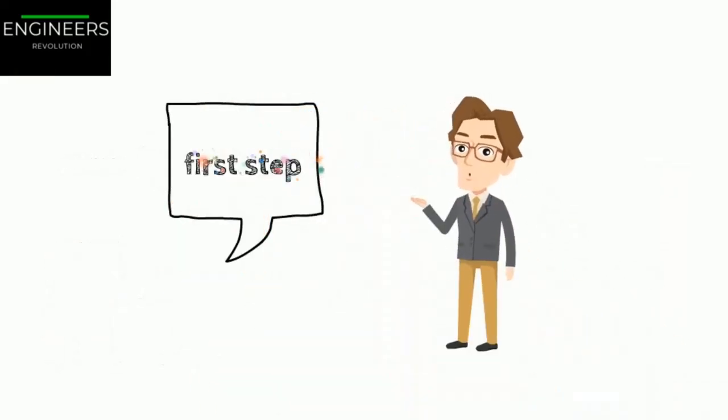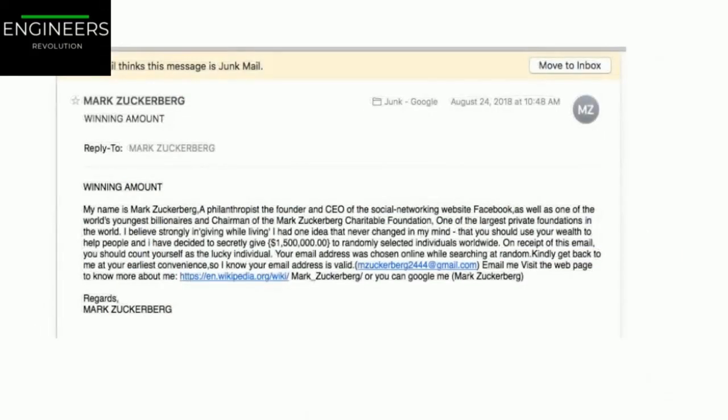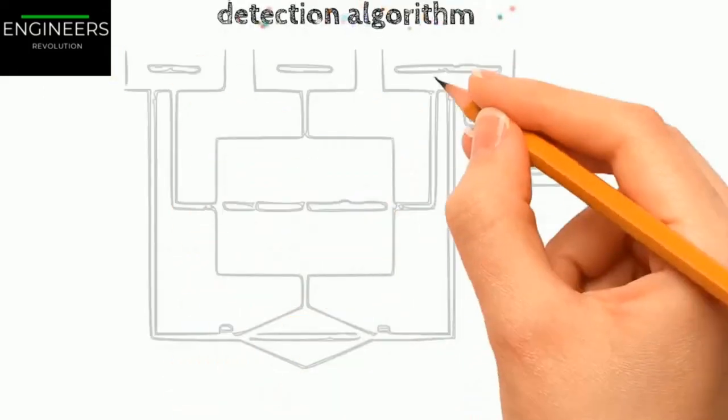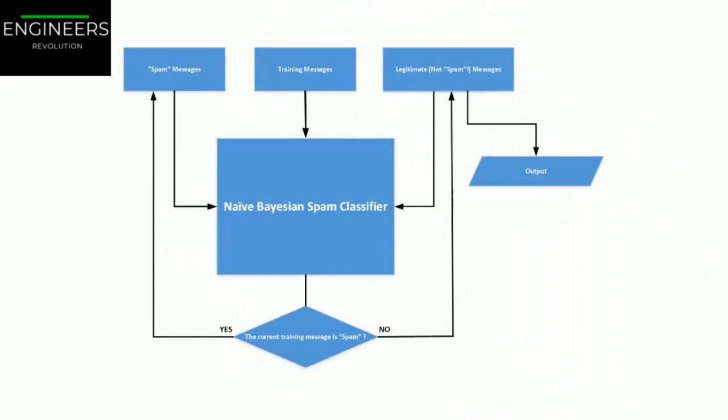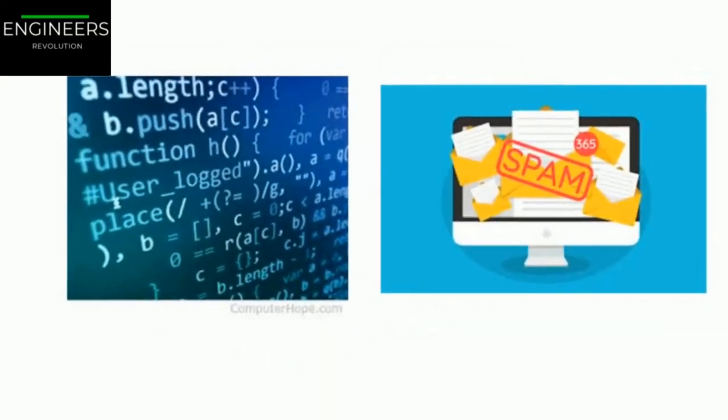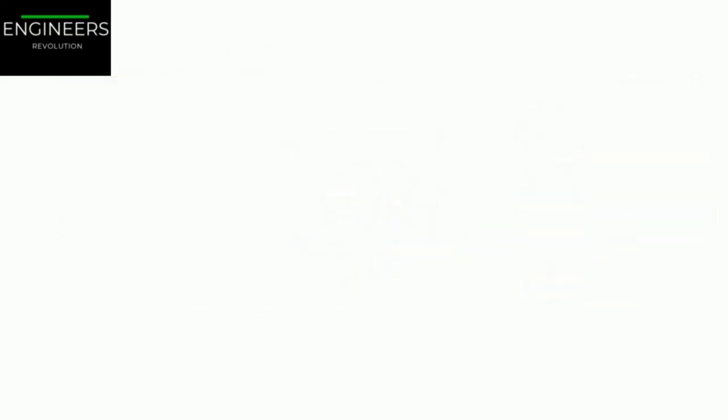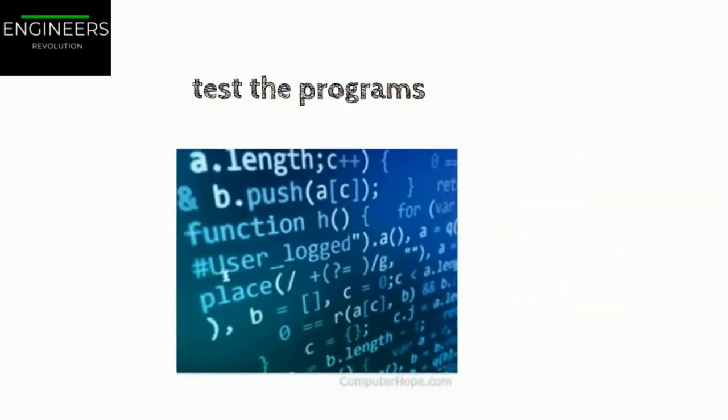The first step would be to look at what spam typically looks like. You might notice that some words or phrases tend to come up a lot in the subject. Perhaps you would also notice a few other patterns in the sender's name, the email's body, and so on. The second step would be to write a detection algorithm for each of the patterns that you noticed, and your program would flag the emails as spam if a number of these patterns are detected. The third step would be to test your program and repeat steps one and two until it is good enough.